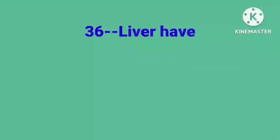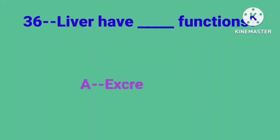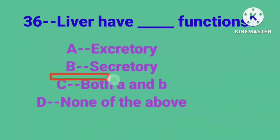Question number 36: Liver have dash functions. Option A: excretory, B: secretory, C: both A and B, D: none of the above. Correct answer is Option C: both A and B.